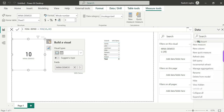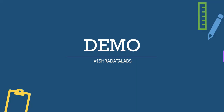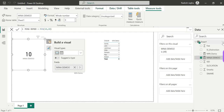Now let's look at MINX. The MINX function returns the smallest value that results from evaluating an expression for each row of a table. The syntax is: MINX(table, expression). MINX, like SUMX, AVERAGEX, COUNTX, and MAXX, is an iterator function — meaning it evaluates each row one by one. So MINX compulsorily needs a table as input, not just a column.